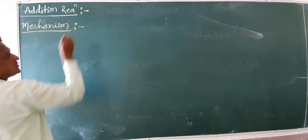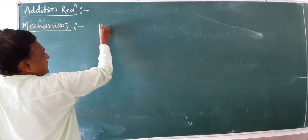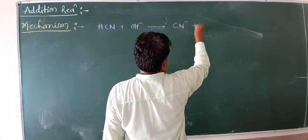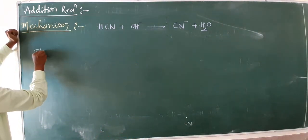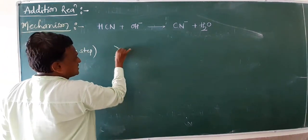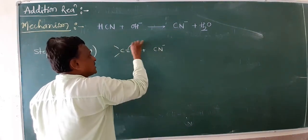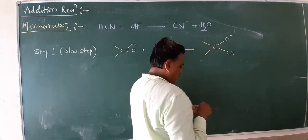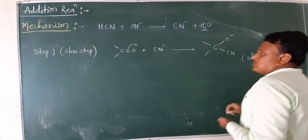In this mechanism we have two steps. The first step is a slow step, or rate-determining step. The carbonyl carbon C=O reacts with CN⁻. The pi bond is cleaved and CN⁻ attacks the carbonyl carbon to form an intermediate alkoxide ion, giving the product C with O⁻ and CN attached.